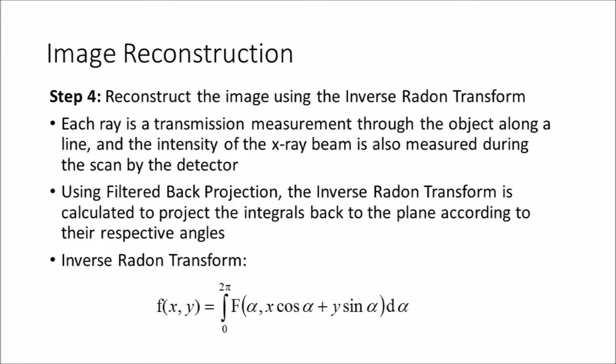This means that the information has to be somehow related to the actual geometry of the object. To accomplish this, the information from the rays that were analyzed are projected back on the plane relative to their angles using the inverse Radon Transform.